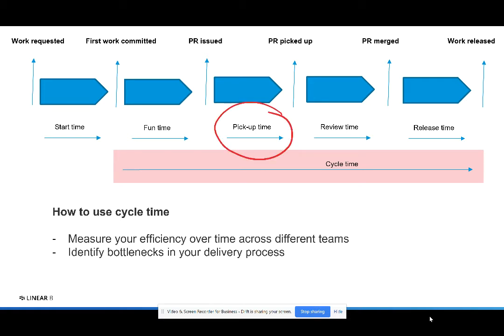For example, if one team has a pickup time higher than others, you know you need to dig in on the importance of the review process with them and potentially even look at their workload as a team. Another example is if your release time is trending higher over time, you know it may be time to invest in continuous delivery and continuous deployment.